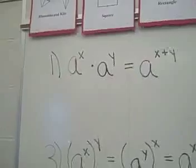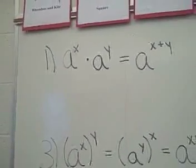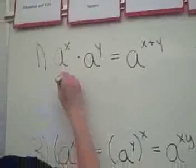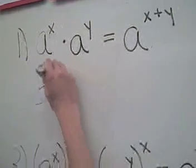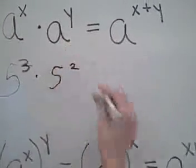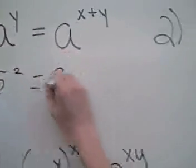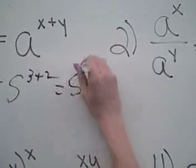Now for exponents. The main thing you need to know regarding exponents are the rules of exponents, which are right here. The first rule is a to the x times a to the y equals a to the x plus y. For example, if a equals 5, then 5 cubed times 5 squared would be the same as 5 to the 3 plus 2, or 5 to the 5th. If you can read my handwriting.